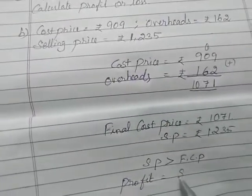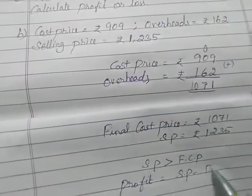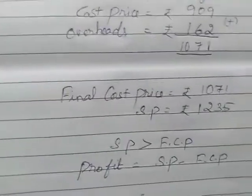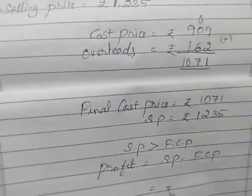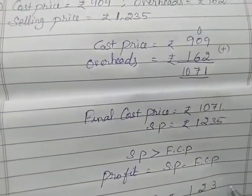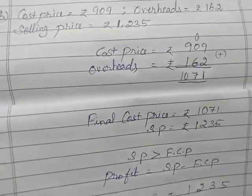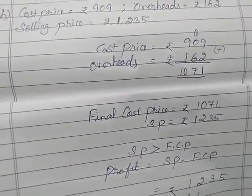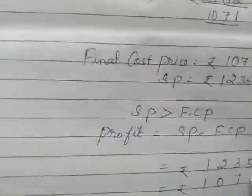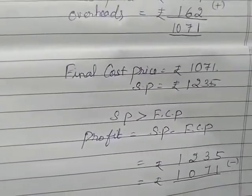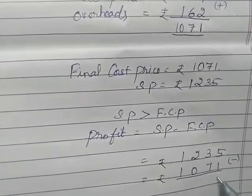So selling price subtract final cost price. What is selling price amount? Rupees 1235. What is final cost price? 1071. So subtract 5 minus 1 that is 4.